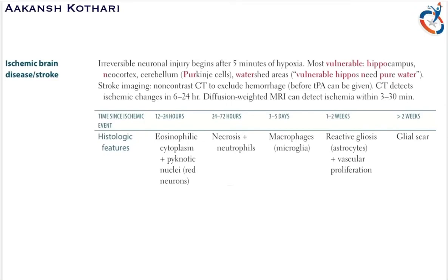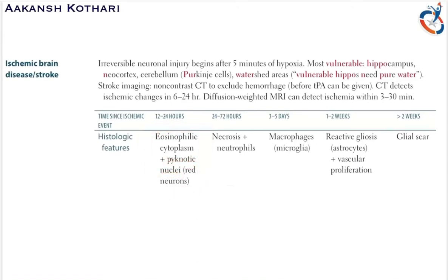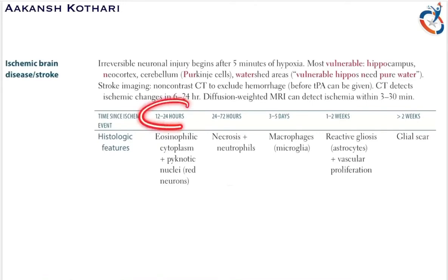Looking at histologic features at different time intervals after ischemic stroke: in 12 to 24 hours there is eosinophilic cytoplasm with karyolytic nuclei — the nuclei are broken down — and there is presence of red neurons. So there is excessive eosinophilia in the cytoplasm with red neurons in this early window.